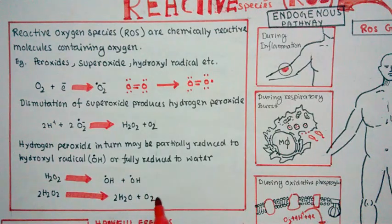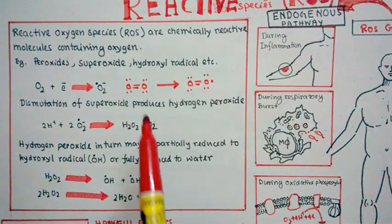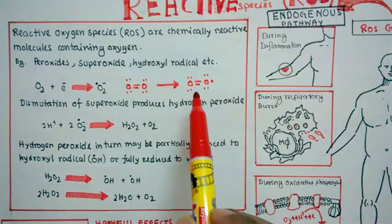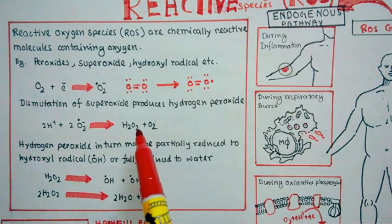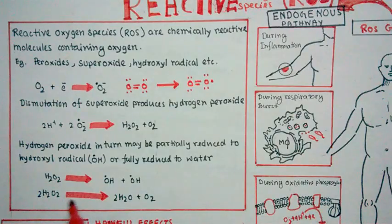So ultimately what happens, our body converts most of these ROS into a non-harmful state. So the most harmful species of ROS is superoxide, which gets converted to hydrogen peroxide. Then hydrogen peroxide could be formed to water, or it could be partially reduced to hydroxyl radical.